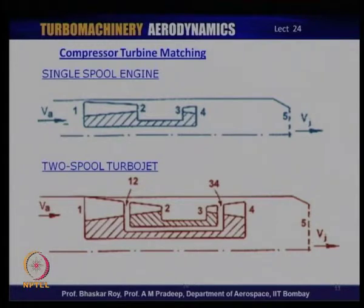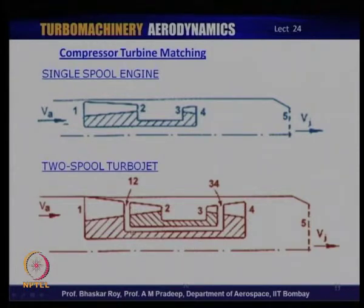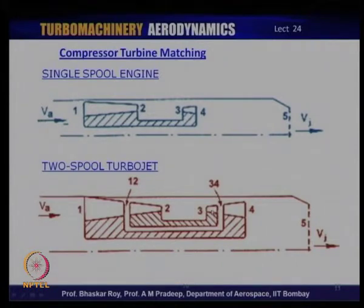Compressor-turbine matching is necessary. For a single spool you match the one compressor with the one turbine. For a two-spool engine you must match the LP compressor with the LP turbine and the HP compressor with the HP turbine. The HP spool and LP spool each have intermediate stations — station 1 and 2 between LP and HP compressors, and stations 3 and 4 between HP and LP turbines.